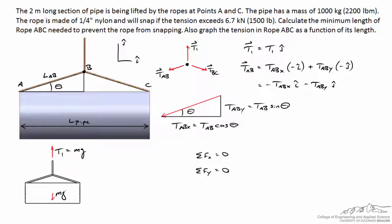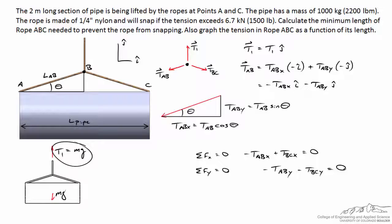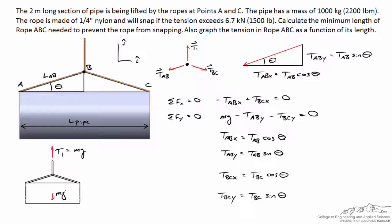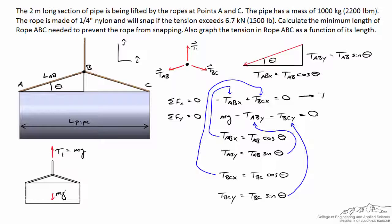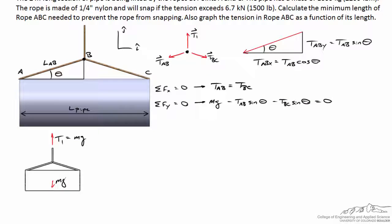Writing our two equations for the sum of forces in X and Y at the knot: in the X direction, negative TABX plus TBCX equals zero. In the Y direction, T1 minus TABY minus TBCY equals zero. Since T1 equals Mg from our first free body diagram, we substitute that in. Writing out the component forms of the tensions and substituting, we find by symmetry that the tension in rope AB equals the tension in rope BC.